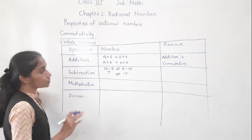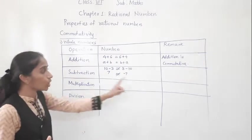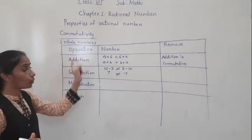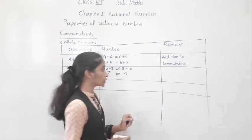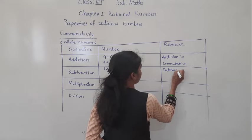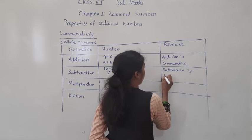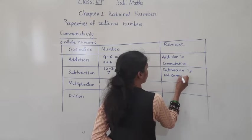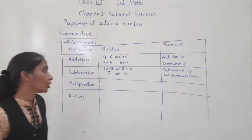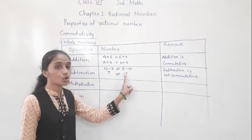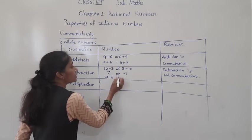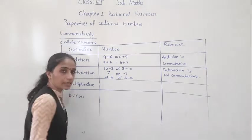So subtraction is not commutative. This property does not work for subtraction. Subtraction is not commutative. A minus B is not equal to B minus A.